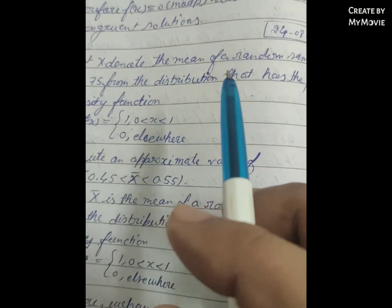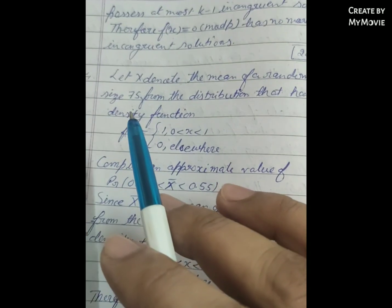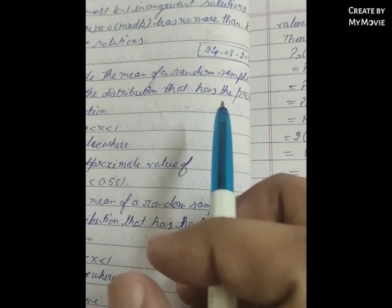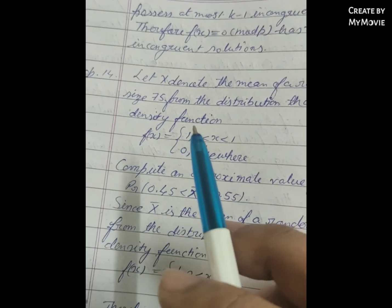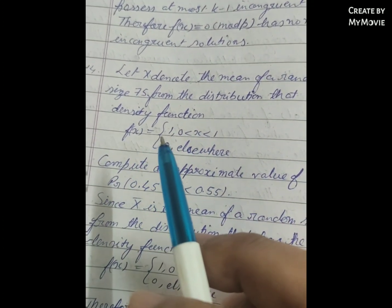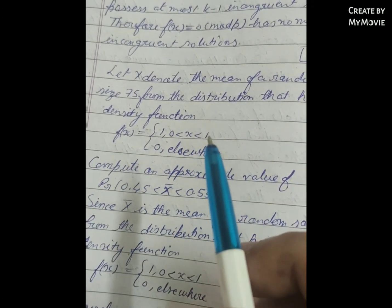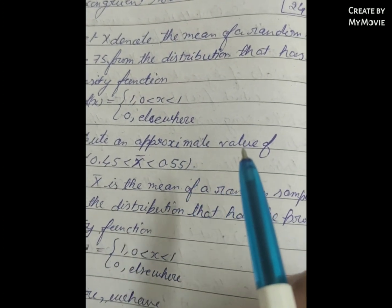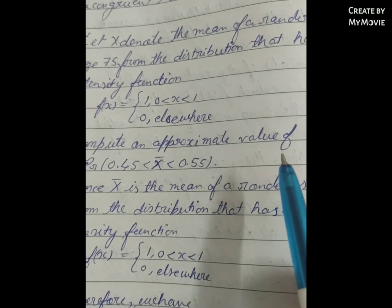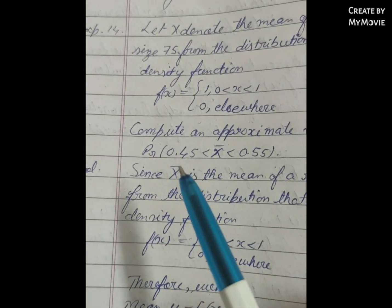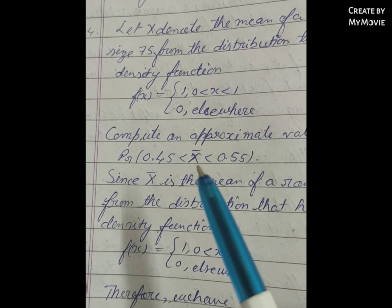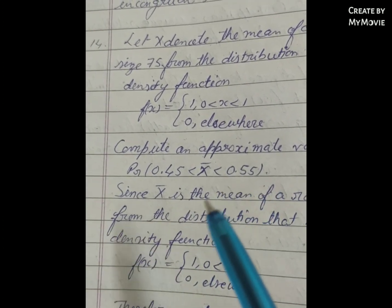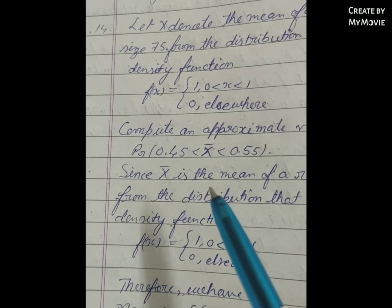Let x̄ denote the mean of a random sample of size 75 from the distribution that has the probability density function f equal to 1, where 0 is less than x is less than 1, and 0 elsewhere. Compute the approximate value of probability that 0.45 is less than x̄ is less than 0.55.